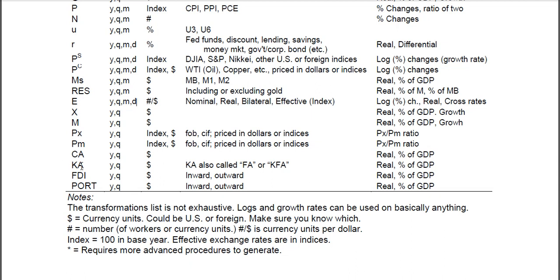The current account is mostly exports plus imports but also includes factor payment flows. The capital account — sometimes called KFA for capital financial account — the correct name is actually financial account, but a lot of economics literature calls it KA for capital account, which is a little outdated. Make sure you know exactly what variables are included. You could have real values divided by prices or percentage of GDP, and these are often used as a measure of financial openness.